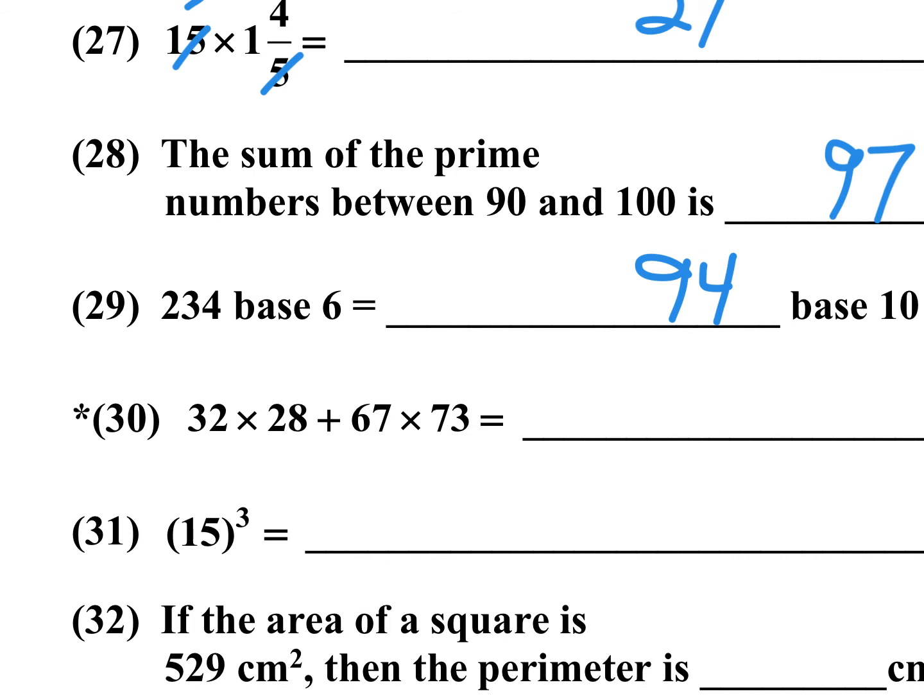Okay, number 30 is an approximation. And you're going to have 32 times 28, plus 67 times 73. Well, what I would do in this problem, I would say 30 times 30, that's pretty close to 900 if I round off. And 70 times 70, that's pretty close to 4,900. And then all you have to do is add 4,900 plus 900. That would be 5,800. So I'll just write 5,800. And that's pretty close for an approximation.